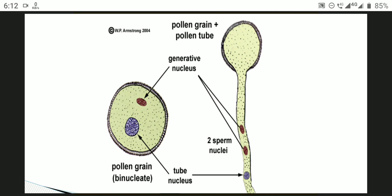Most pollen grains are released at the binucleate stage; in some cases trinucleate pollen grains are also released. When this pollen grain germinates, the intine protrudes out in the form of a pollen tube, and the whole contents — cytoplasm, generative nucleus, and tube nucleus — migrate into it. The generative nucleus may then divide into two sperm nuclei, or two male gametes.